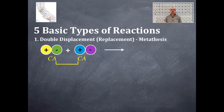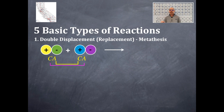Now, to come up with the products, the pattern is the following: we're going to combine the anion from the first California and the cation from the second California. Combine those together — that's going to be one product. Remember, you always have the cation first, then the anion second. Then we take the cation from the first compound and the anion from the second compound and combine those together, and that will be your other product.